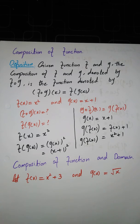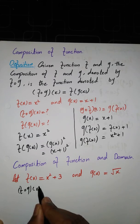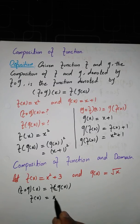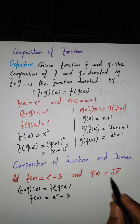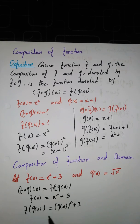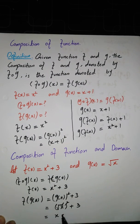Now we find (f∘g)(x) = f(g(x)). Since f(x) = x² + 3, we replace x with g(x) = √x. So f(g(x)) = (√x)² + 3. After simplification, the square and square root cancel, giving f(g(x)) = x + 3. That is our f∘g.